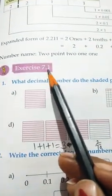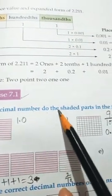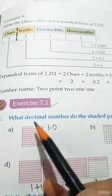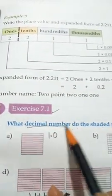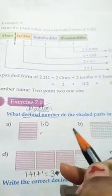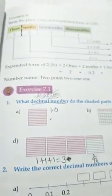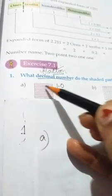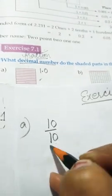Now we are going to start the sums of exercise 7.1. We have to write the decimal number for these diagrams. Before writing the decimal number, we will first write the fractional number. We will write the fraction for the shaded portion, and after that we will write the decimal. In part A, you can see the total boxes are 10, and all 10 are shaded. So the fraction will be 10 by 10.